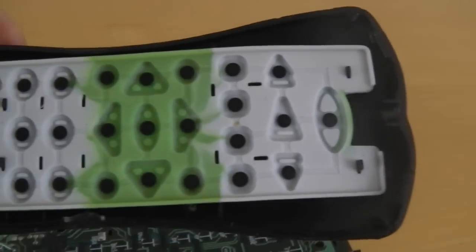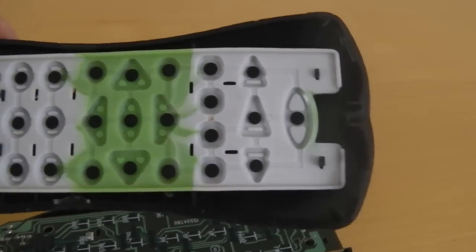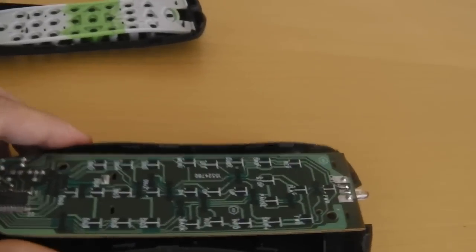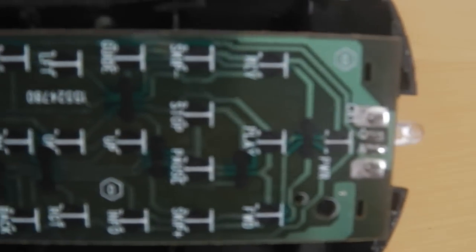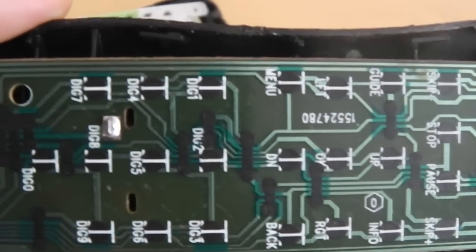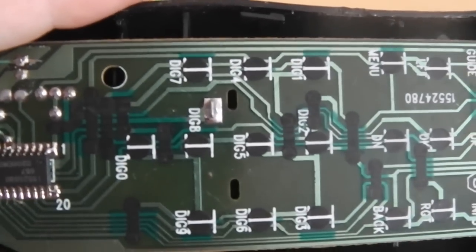These might be worth cleaning at the same time while you're here. If you've got a faulty little button, it's good to clean these and also clean the actual contacts on the PCB. You can see those little black deposited items on the printed circuit board.